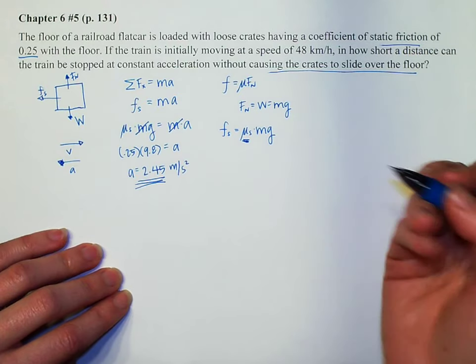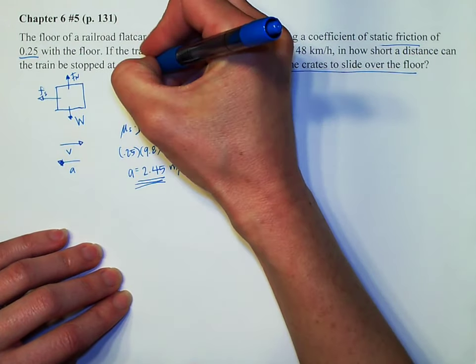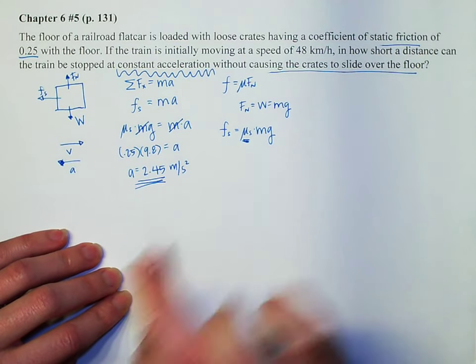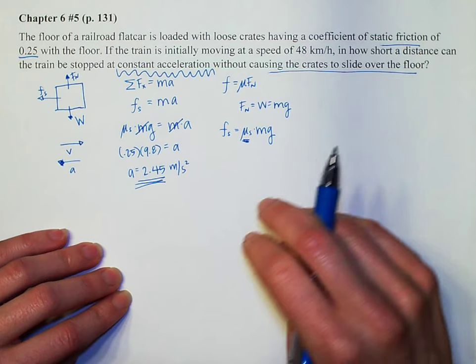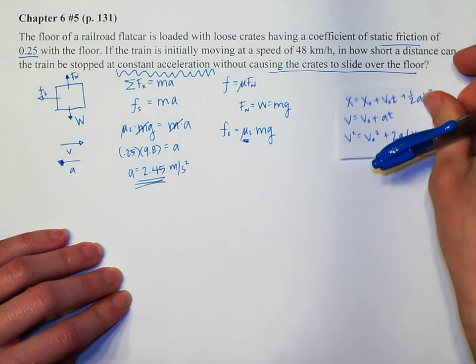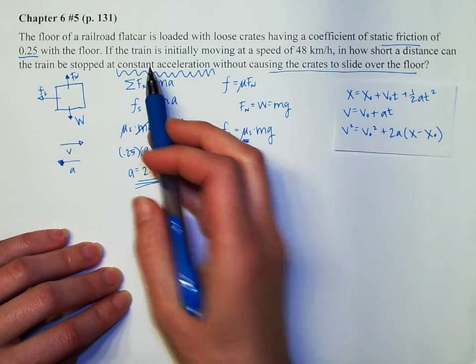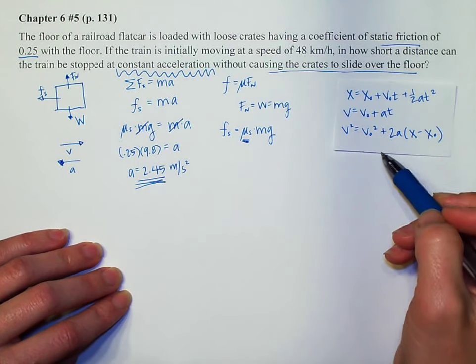But the other big clue in this problem right here is that it says constant acceleration. Whenever you see that, you should have flashbacks of chapter 2, 3, and 4 where we learned kinematics. Because if I have a constant acceleration, then I can use any one of these equations.